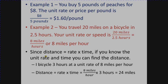Since distance equals rate times time, if you know the unit rate and the time you can find the distance. For example, bicycling three hours at eight miles per hour: distance equals rate times time, so eight miles per hour times three hours. The units cancel — hours in the denominator and hours as a factor cancel — and you're left with 24 miles.